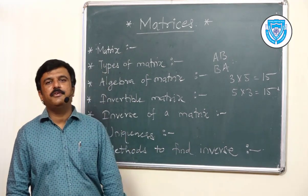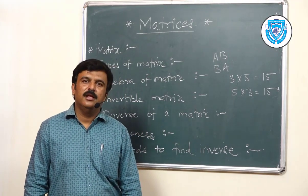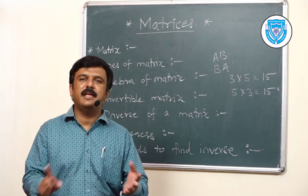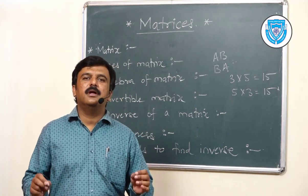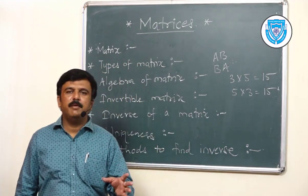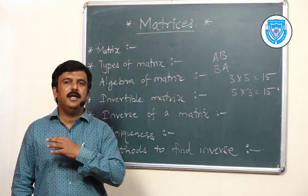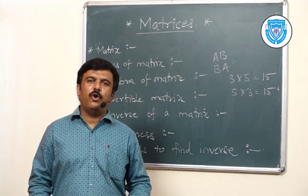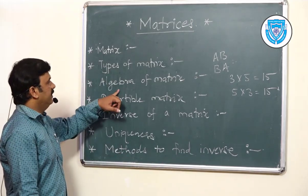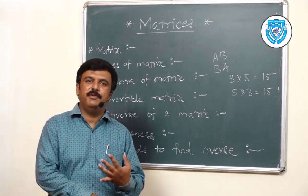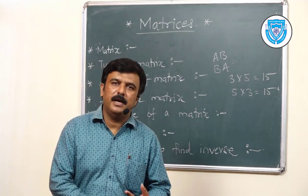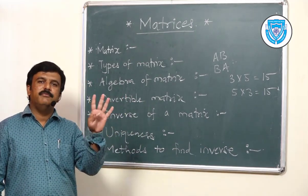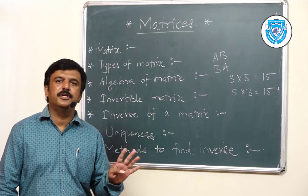The last operation is scalar multiplication, and this operation is very simple — there is no restriction. We can multiply any matrix by any non-zero scalar as per our requirement and convenience. So these are the four operations we can perform on matrices. We discussed the definition of matrix, the types of matrix, and now the algebra of matrices — meaning we can perform four different operations on matrices.